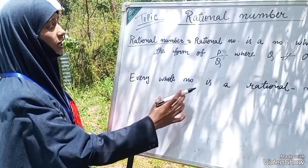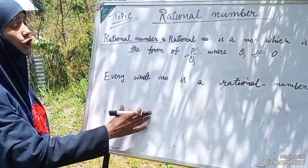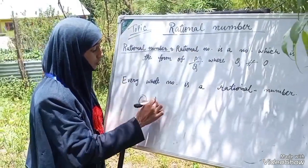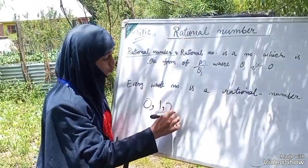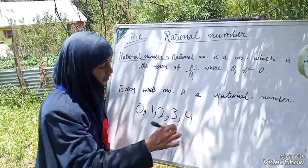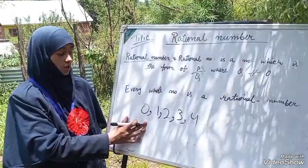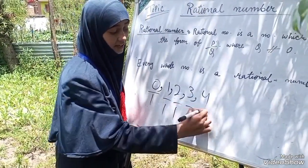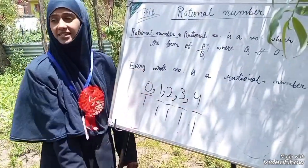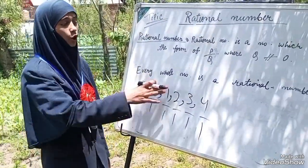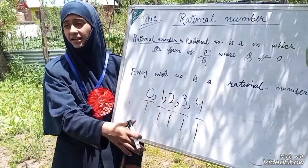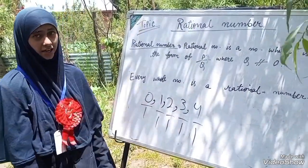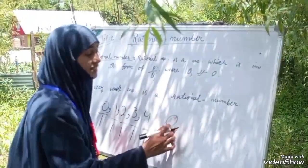Every whole number is a rational number. For example, zero, one, two, three, four — these are whole numbers. Zero is also a rational number.